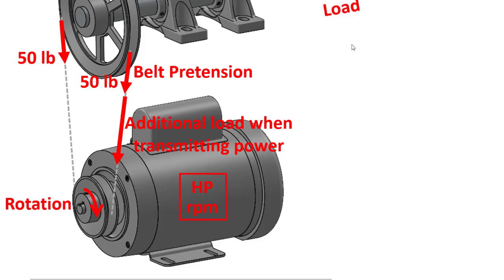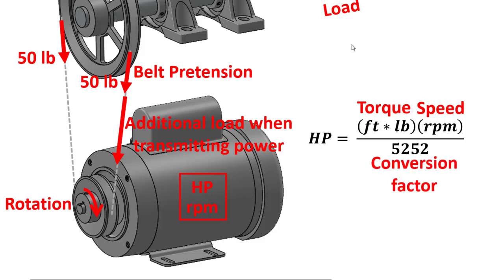Once we have that information, we can calculate how much torque the motor is delivering using this equation. Power equals torque in foot-pounds times speed in RPM divided by the necessary unit conversion factor to convert to horsepower. The torque in foot-pounds is the only unknown in this equation and we can solve for it. Once we know the torque in the motor shaft,